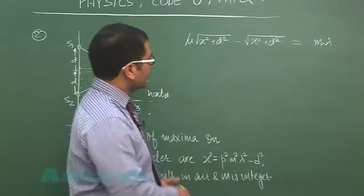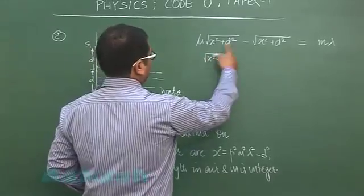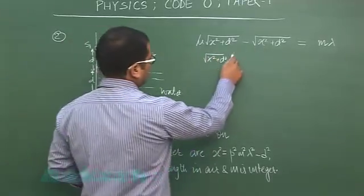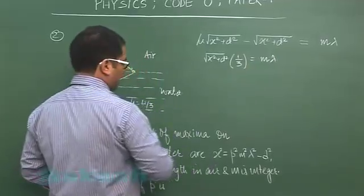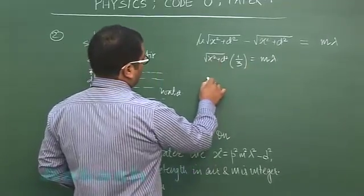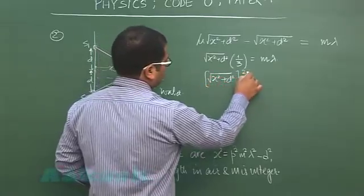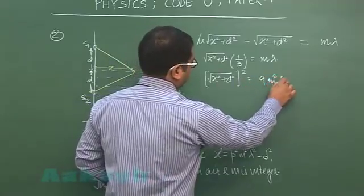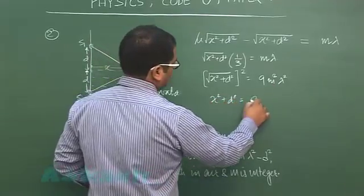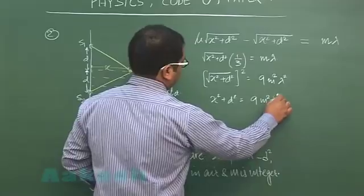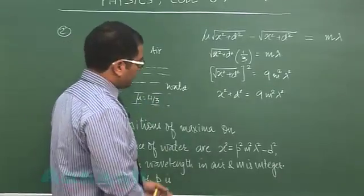I will be getting root of x square plus d square. If I take common bracket, it would be mu minus 1, and that would be 1 by 3, equals m times lambda. If I square, I will be getting x square plus d square equals 9m square lambda square.